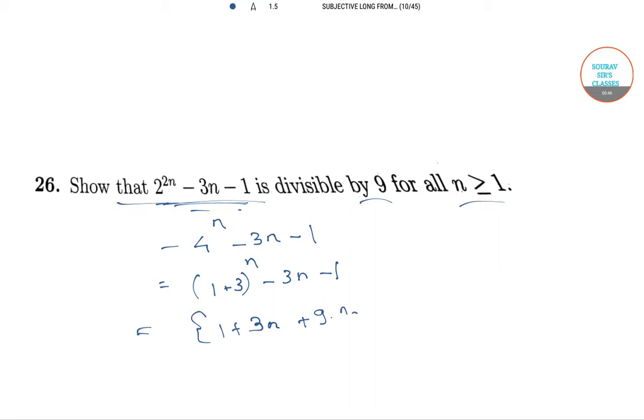9 into nC2 and so on till plus 3 raised to the power n minus 3n minus 1, which equals 9nC2 plus 3nC3 plus and so on till 3 raised to the power n minus 2.